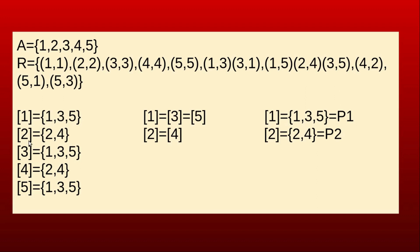The equivalence class of 2: since 2 is related to 2 and 2 is related to 4, the equivalence class of 2 is {2, 4}. Observing this relation further, the equivalence class of 3 is {1, 3, 5}, the equivalence class of 4 is {2, 4}, and the equivalence class of 5 is {1, 3, 5}. We can see that the equivalence class of 1 equals the equivalence class of 3, which equals the equivalence class of 5, and the equivalence class of 2 equals the equivalence class of 4. So there are only 2 distinct equivalence classes.